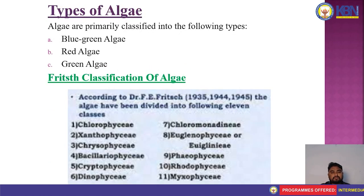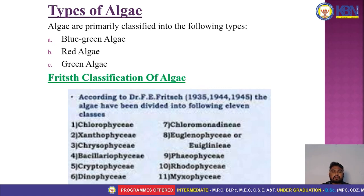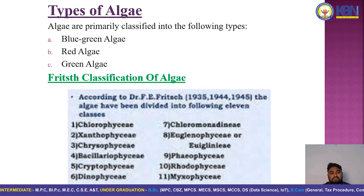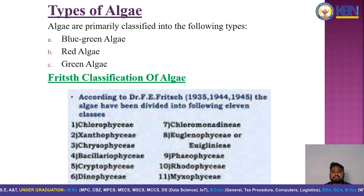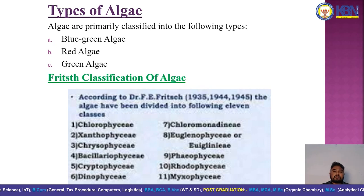The types of algae are primarily classified into three types: blue-green algae, red algae, and green algae. The Fritz classification of algae, according to Dr. F.P. Fritz (1935–1945), classifies algae into 11 groups: Chlorophyceae, Xanthophyceae, Chrysophyceae, Bacillariophyceae, Cryptophyceae, Dinophyceae, Chloromonadosyl, Euglenophyceae, Phaeophyceae, Rhodophyceae, and Myxophyceae.